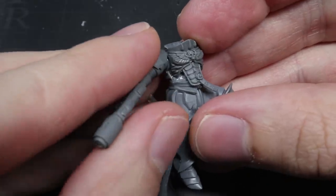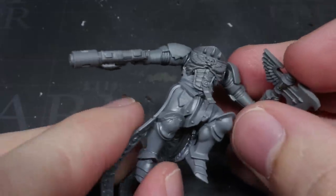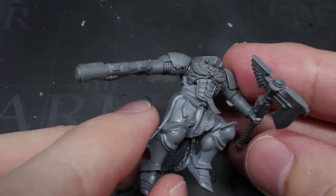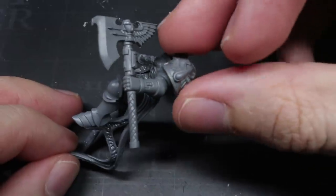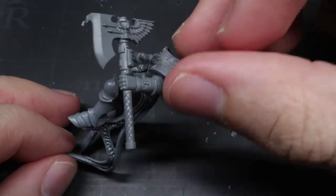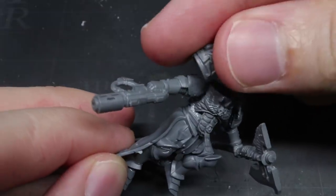I then proceeded to attach the arms to the torso which thankfully covered up a few other gaps created when I attached the new torso front. With the arms in place, I could attach my shoulder pads which had also been taken from the sanguinary guard kit.